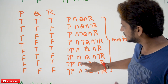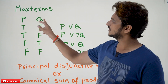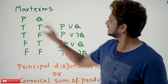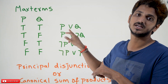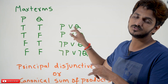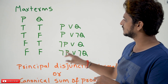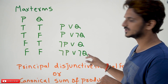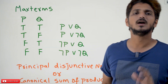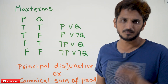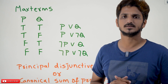Similarly, Max Terms use the same logic. We are going to use P, Q — T means P, T means Q — but in between you have to place disjunction: P disjunction Q; P disjunction negation Q; negation P disjunction Q; negation P disjunction negation Q. These we call Max Terms for two variables. Similarly for three variables.